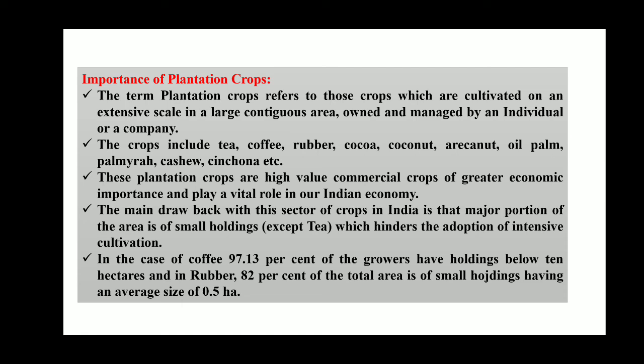The main drawback with plantation crops in India is that the major portion of the area consists of small holdings, except tea, which hinders adoption of intensive cultivation. In the case of coffee, 97.13 percent of growers have holdings below 10 hectares, and in rubber, 82 percent of the total area is under small holdings. Because of small holdings, intensive cultivation and high technologies have limitations.